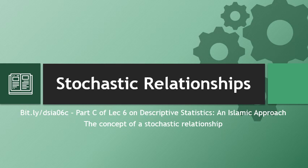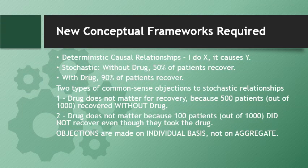This is part C of lecture 6 on descriptive statistics and Islamic approach. In this third part of the lecture we will discuss the concept of a stochastic relationship between two variables. It requires new ways of thinking because most people make mistakes about it — we are used to thinking in terms of one thing causing another, on an individual one-to-one basis.